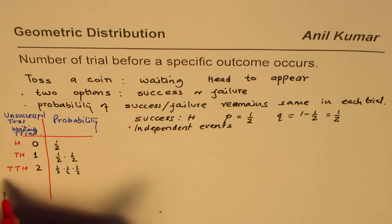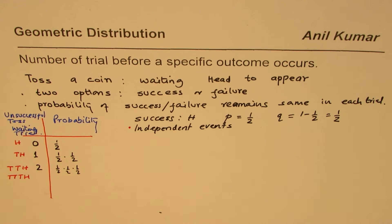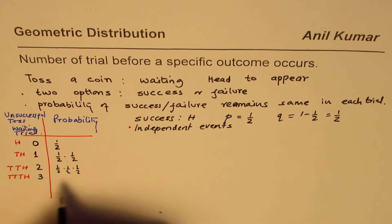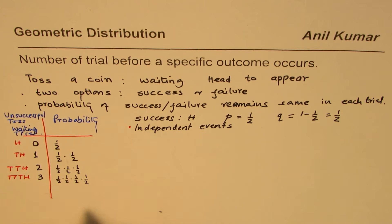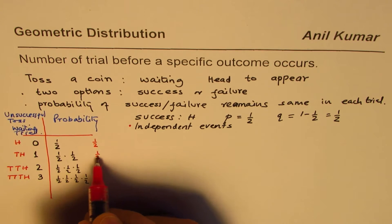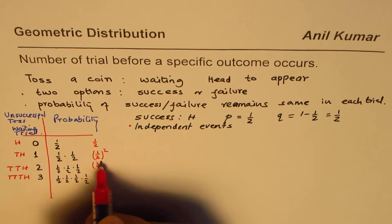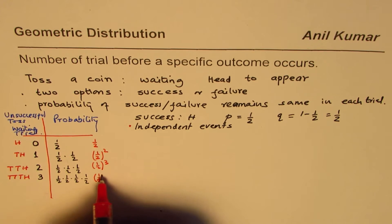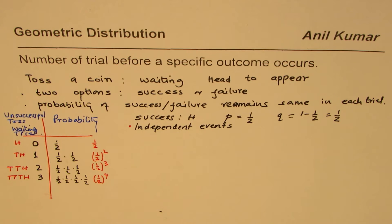Similarly it just goes on — tail, tail, tail, and then head means a waiting period of three, giving one-half to the power of four. What you find here is that the probability is decreasing in geometric fashion: it is one-half, then one-half squared, then one-half cubed, then one-half to the power of four — a geometric progression where each time it gets multiplied by a factor less than one, which in this case is one-half.